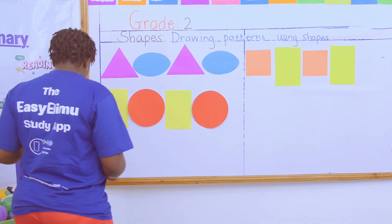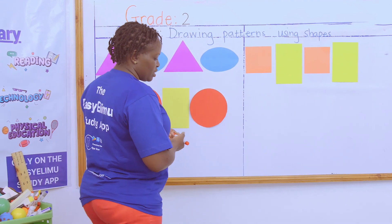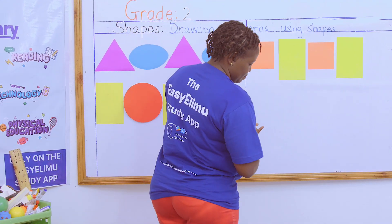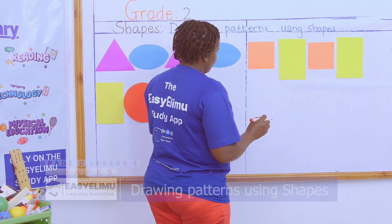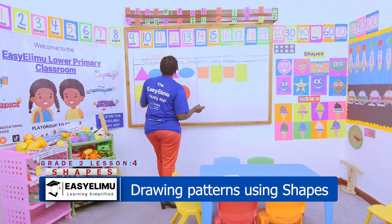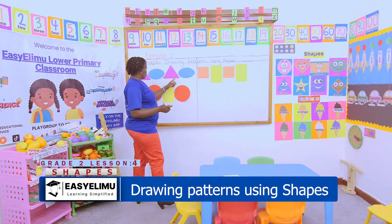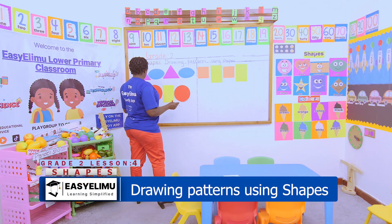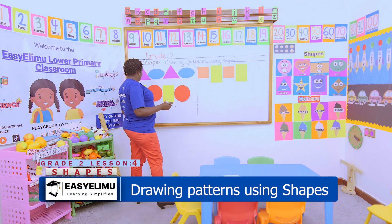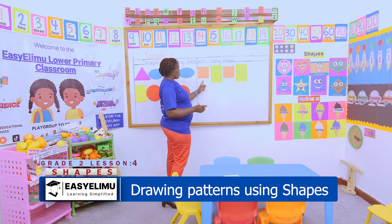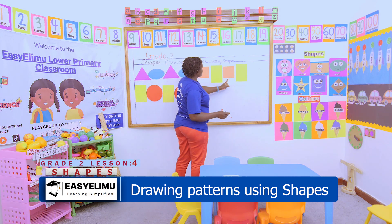What if you are now told to draw those patterns? This one is made of triangle, oval, triangle, oval. This is rectangle, circle, rectangle, circle. This is square, rectangle, square, rectangle.